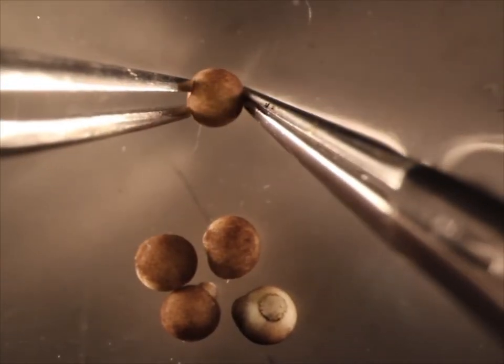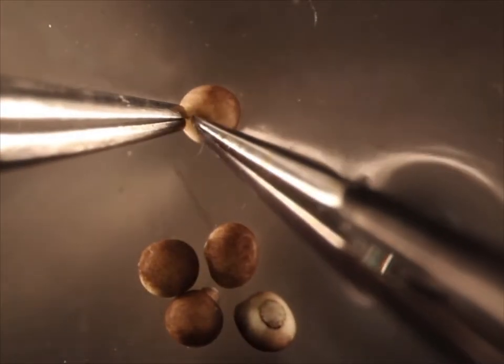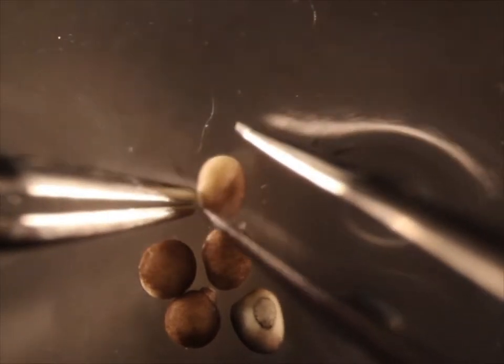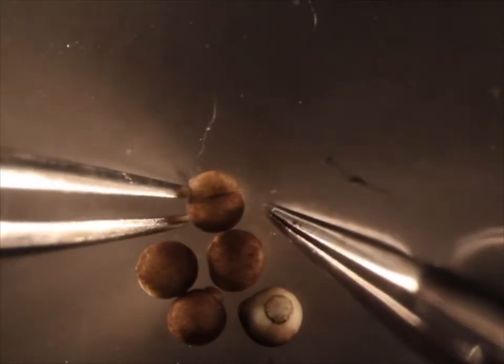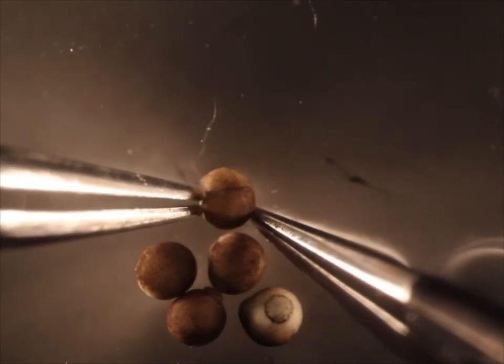The first step in creating animal cap explants is to remove the vitelline membrane, which is a clear protective barrier around the embryo. This has been completed prior to today's lab.